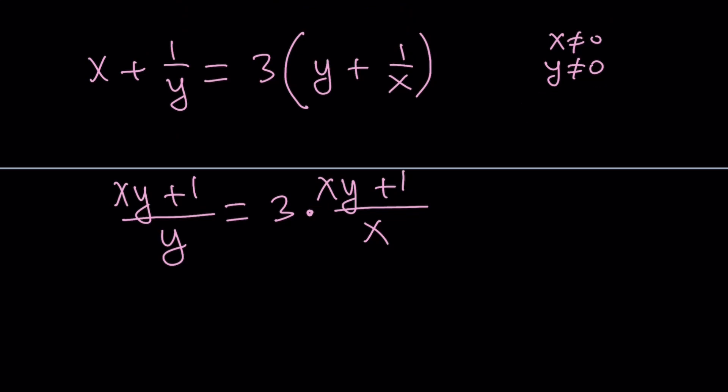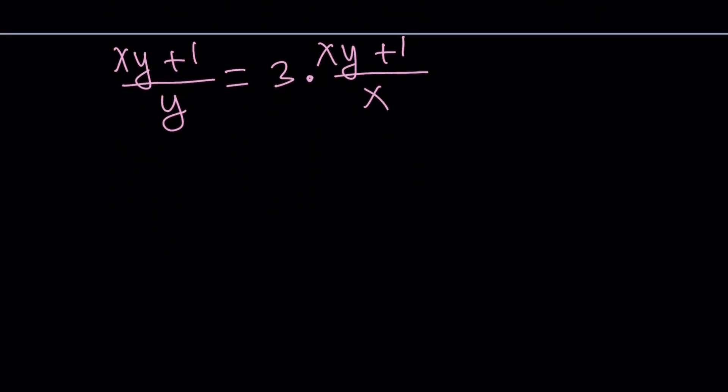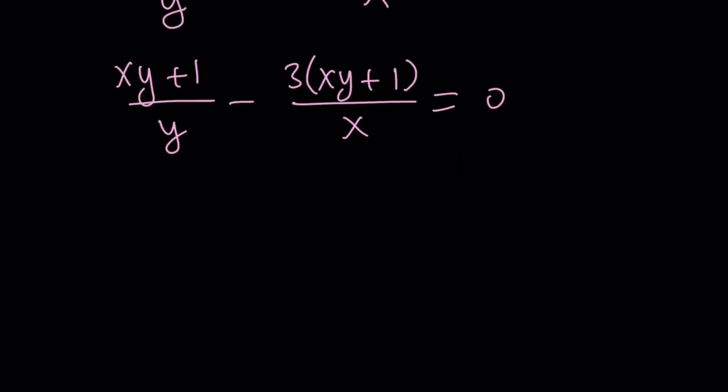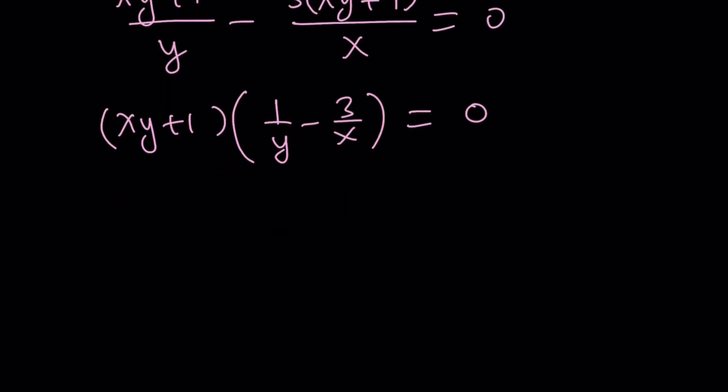So let's do the following. First of all, when you see an equation like this, you see xy plus 1 on both sides. So you can take everything on the same side like this. That's a 0. And then take out xy plus 1, and you're going to get 1 over y minus 3 over x equals 0. I know it doesn't look that nice, but from here we get two solutions.